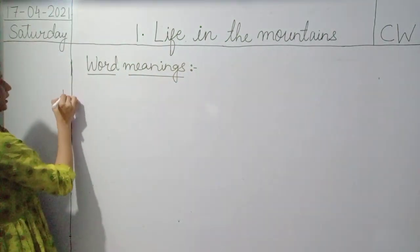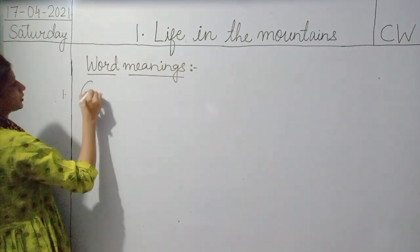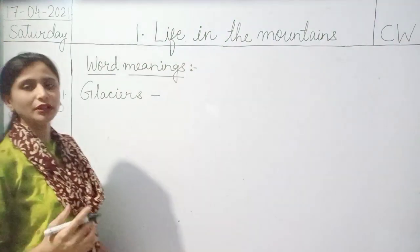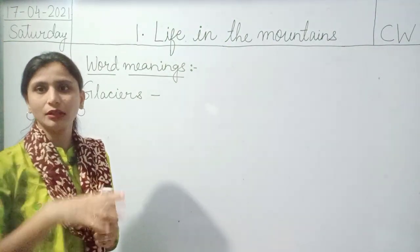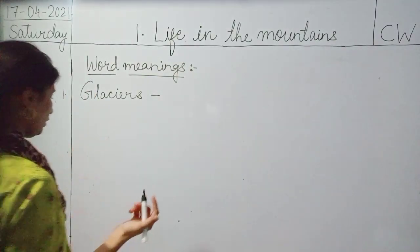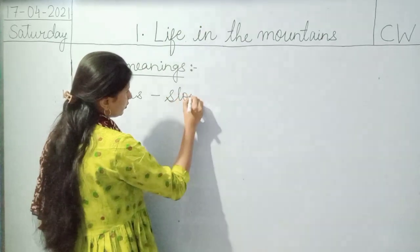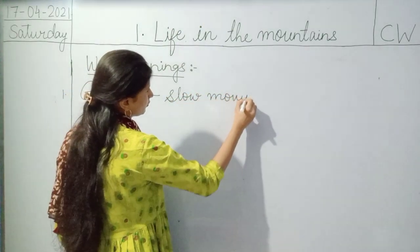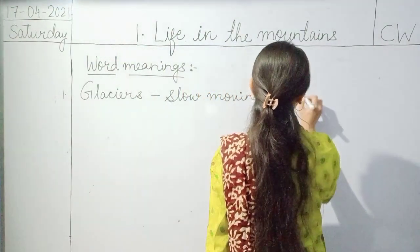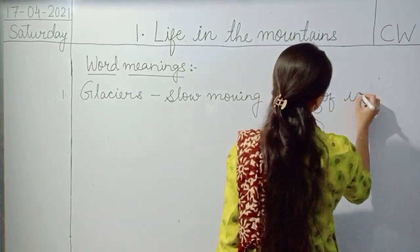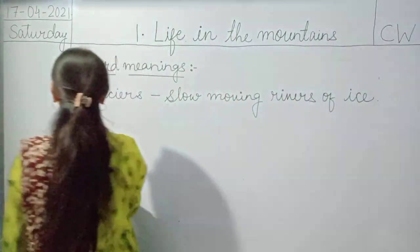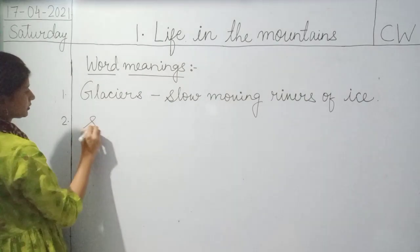The very first word meaning we are going to see is Glaciers. What do you mean by glaciers? Glaciers are slow moving rivers of ice. We will write here: slow moving rivers of ice are called as glaciers.